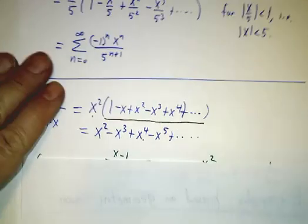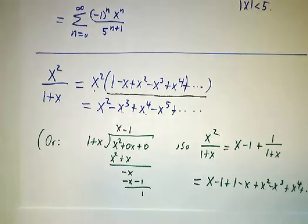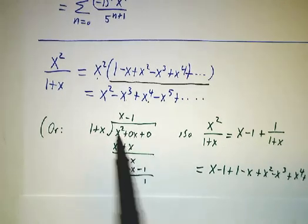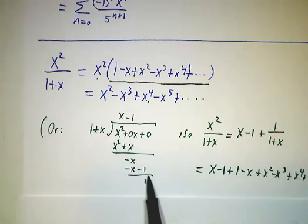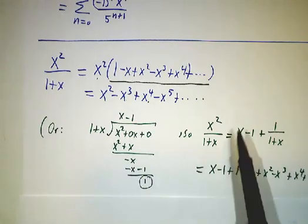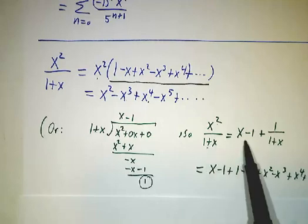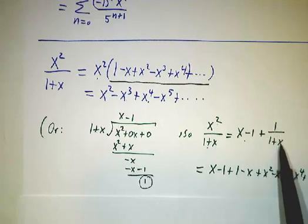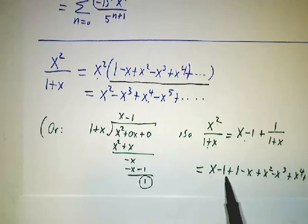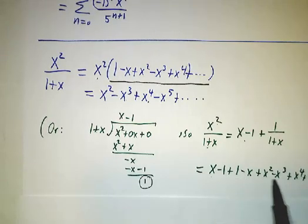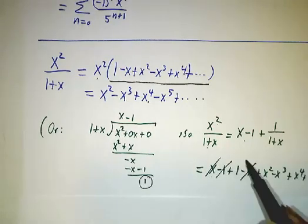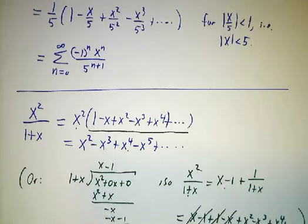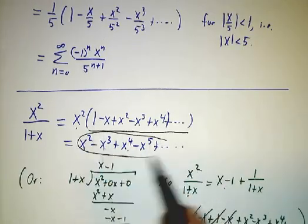We could also have gotten the same result by long division. We could have said x squared divided by 1 plus x is x minus 1 with a remainder of 1. In other words, x squared over 1 plus x is x minus 1 plus 1 over 1 plus x. So it's x minus 1 plus, well, what's 1 over 1 plus x? It's 1 minus x plus x squared minus x cubed plus x to the fourth. Then we cancel, cancel, and we find ourselves with exactly the same answer we had before.